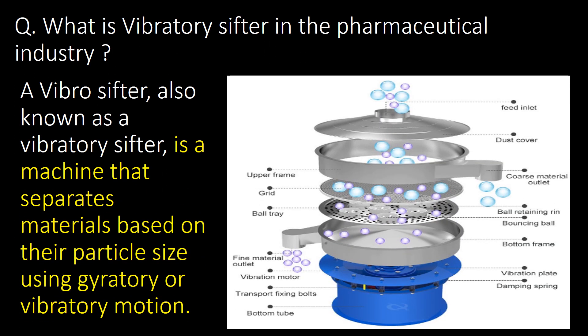Welcome. We will start with a very basic question: what is a vibratory shifter in the pharmaceutical industry? A vibro shifter, also known as a vibratory shifter, is a machine that separates materials based on their particle size using gyratory or vibratory motion.